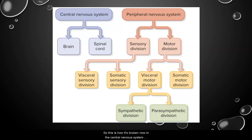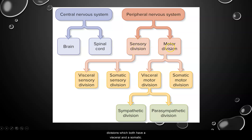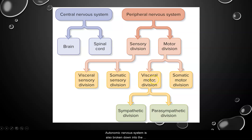So here is how it's broken down: the central nervous system is made up of the brain and spinal cord, and the peripheral nervous system is made up of essentially everything else. It is broken down further into the sensory and motor divisions, which both have visceral and somatic subdivisions. The visceral motor division, or autonomic nervous system, is also broken down into the sympathetic and parasympathetic.